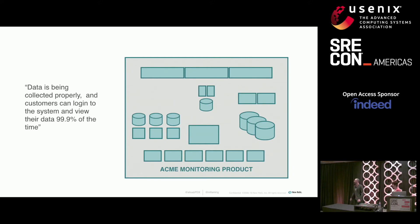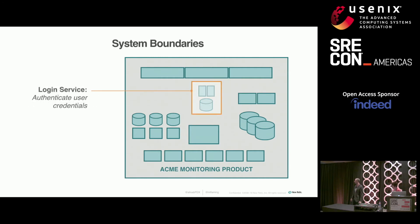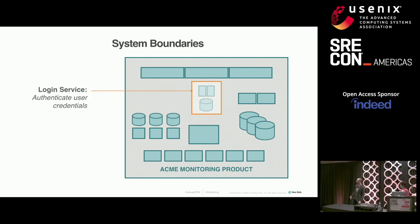To answer that question, we need to introduce another piece of terminology, which is the idea of a system boundary. This is actually what was referred to earlier by Dave Rezen from Google as an application. But a system boundary is where one or more components expose one or more capabilities to external customers. So here we've got the example of a login service which exposes an API representing the capability to authenticate a set of user credentials.